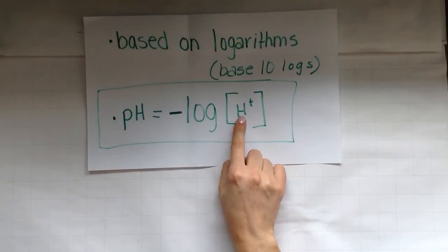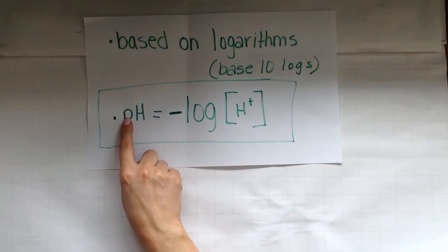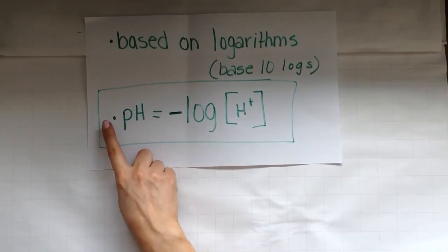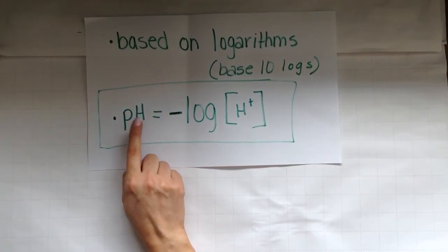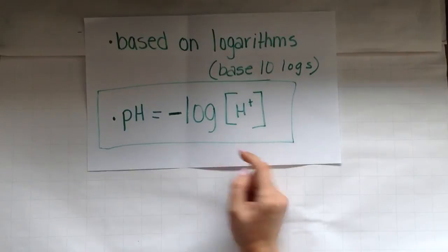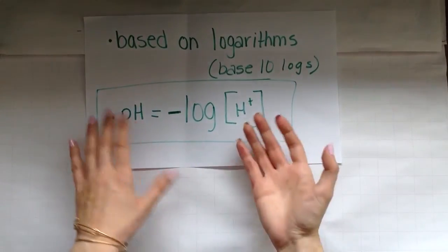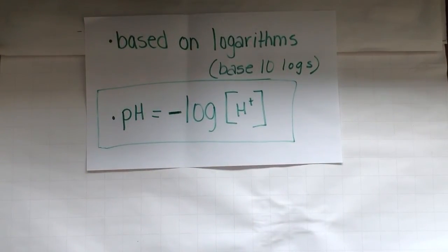How about if I want to do the reverse? Let's say instead of giving you the H plus concentration, I'm giving you this side of the equation on the opposite side of the equal. So I'm giving you pH and you're solving for H plus. Well, that's called the inverse. The inverse.